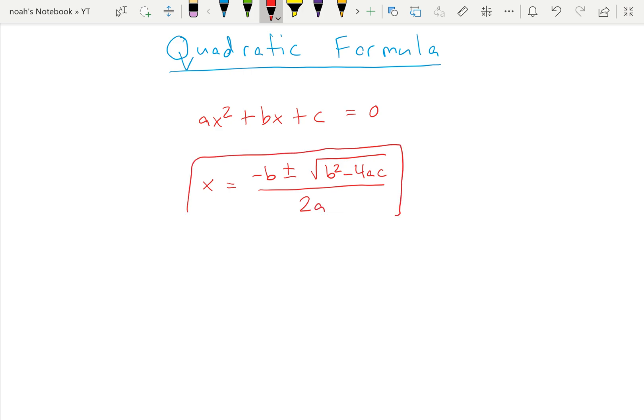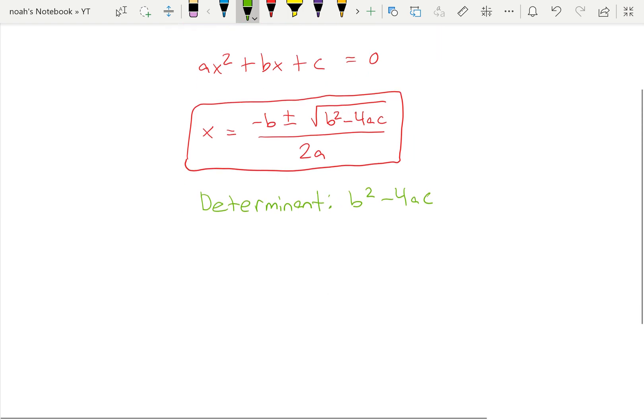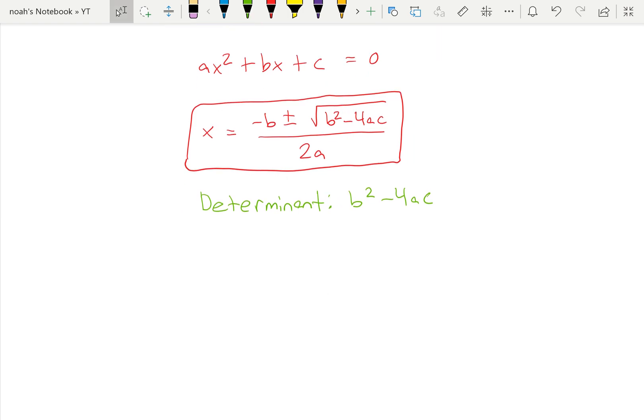Before you plug the values into the formula, you can analyze it by looking at the determinant. This is the part inside the square root, which is b squared minus 4ac. This determines how many solutions the equation has.